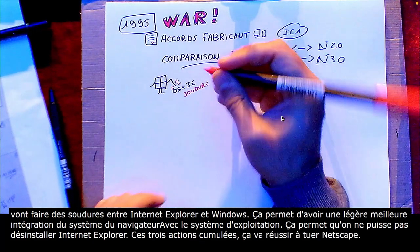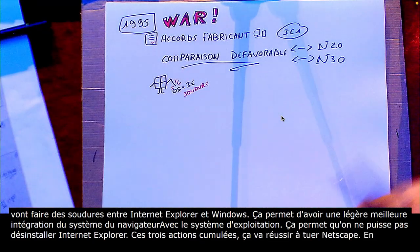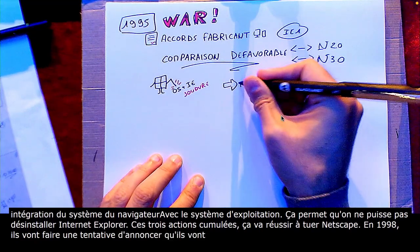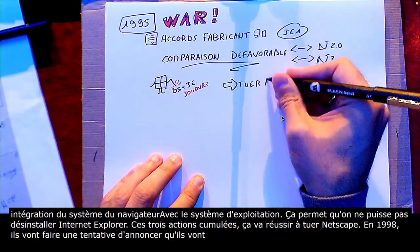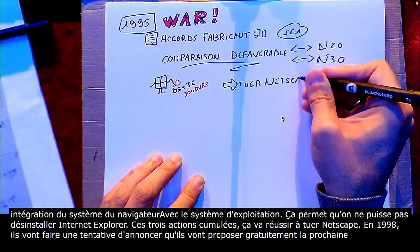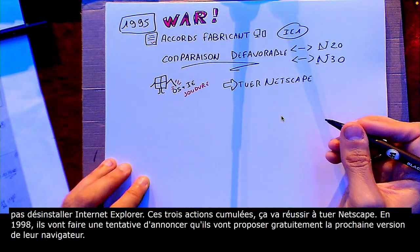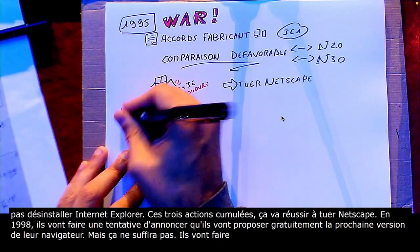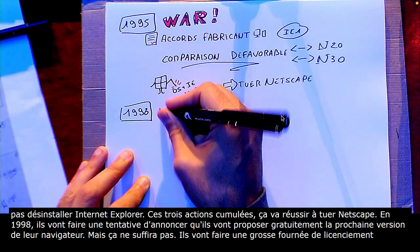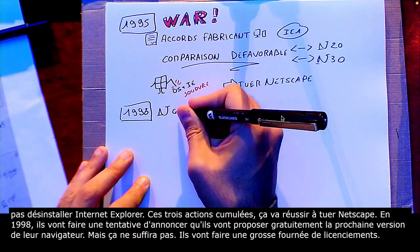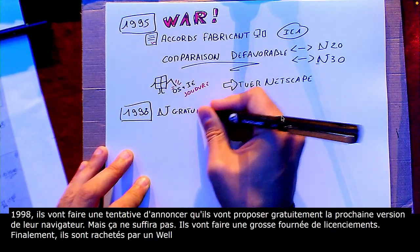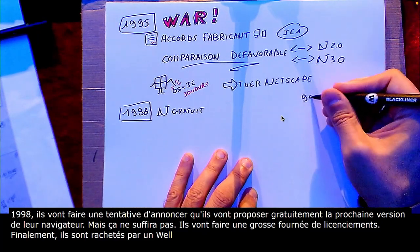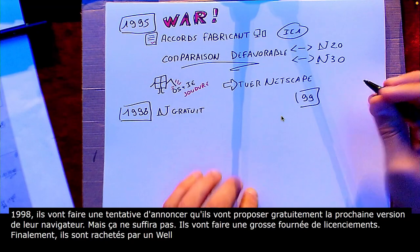Ces trois actions, au final, cumulées, au bout d'un moment, ça va réussir à tuer Netscape. En 1998, ils font une tentative en annonçant qu'ils vont proposer la prochaine version de leur navigateur gratuitement au public, parce qu'avant, ils vendaient — oui, des gens étaient prêts à payer pour un navigateur. Mais ça ne suffira pas. Donc, ils vont faire une grosse fournée de licenciements et finalement, ils sont rachetés par AOL. Et en 1999, le nombre d'utilisateurs d'Internet Explorer passe devant celui de Netscape.